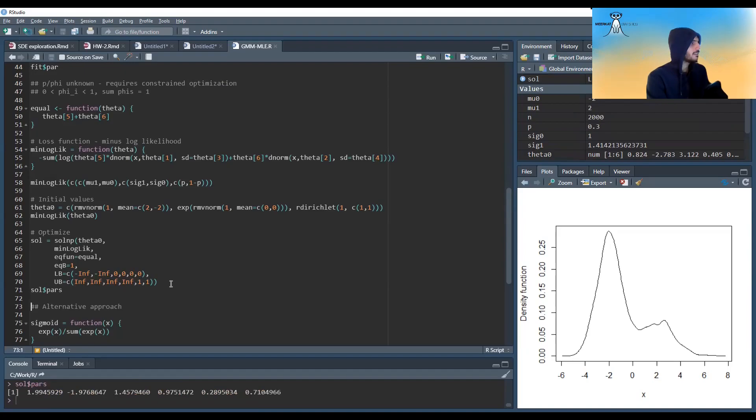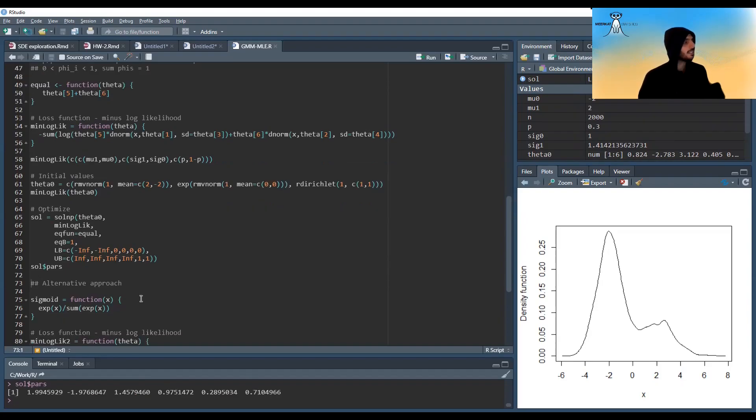So we can run this and we see again, we get almost two, almost minus two, almost square root of two, almost one, almost 0.3 and almost 0.7. So it worked kind of well. I tried this on some other problems and it didn't work so well, actually.